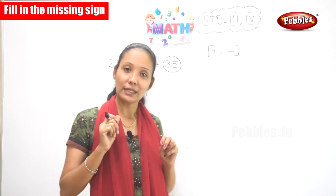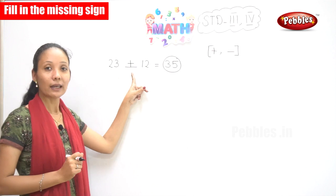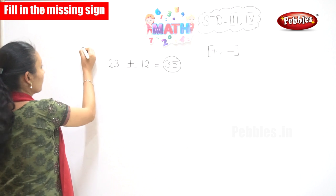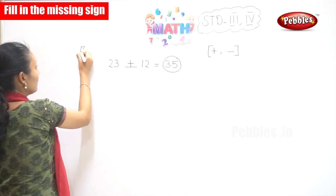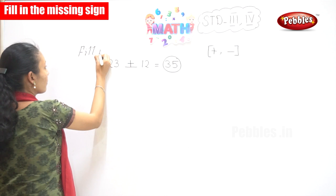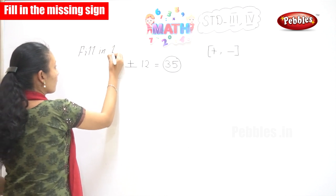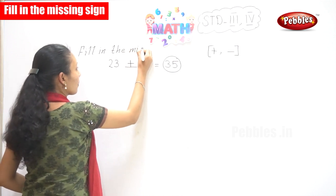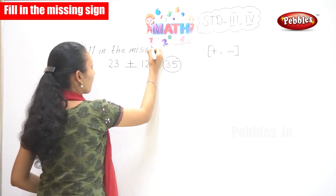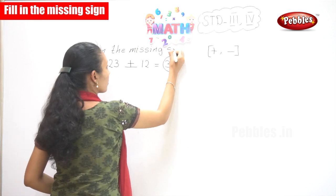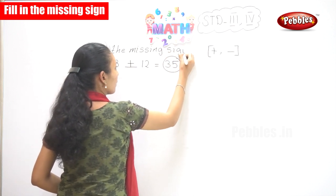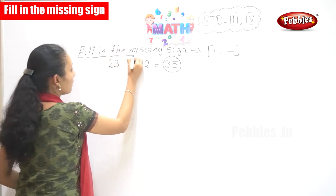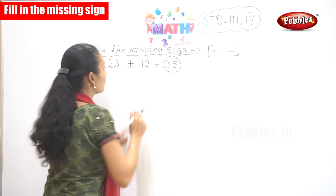So what is the sign? Yes, plus. Now, what is this activity called? It is called fill in the missing sign. The two missing signs are plus and minus.